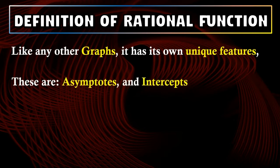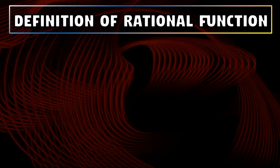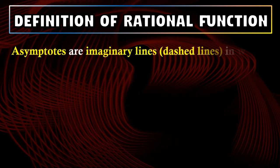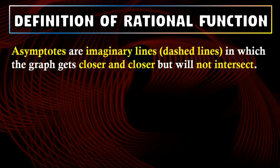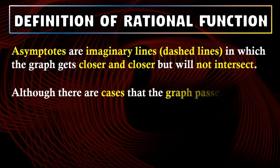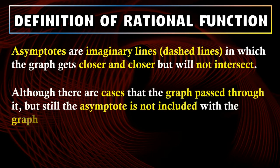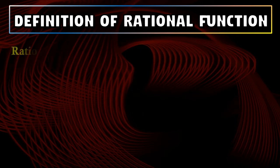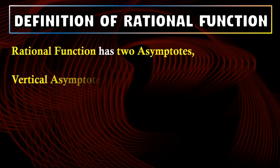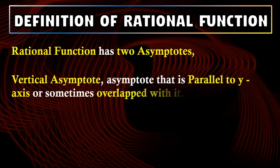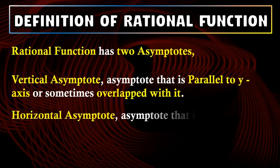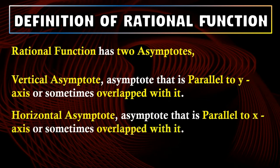I'm pretty sure that you've encountered asymptotes with other graphs. Asymptotes are dashed lines or imaginary lines in which the graph gets closer and closer but will not intersect. On some cases, the graph can pass through it, but only under a certain condition. A rational function has two asymptotes: the vertical asymptote, which is parallel or sometimes overlapping with the y-axis, and the horizontal asymptote, which is parallel or sometimes overlapping with the x-axis.